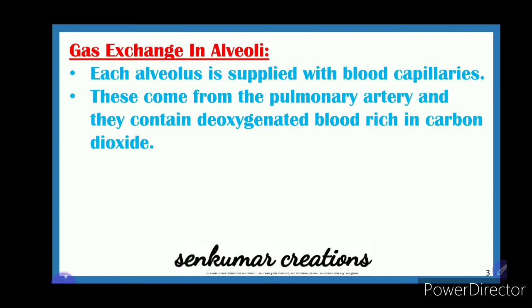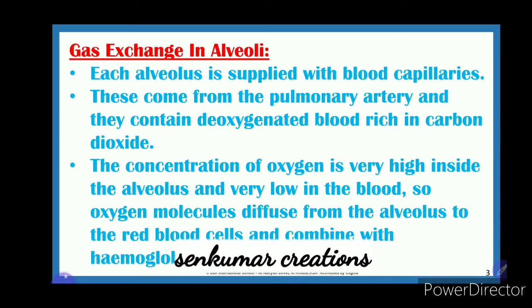The concentration of oxygen is very high inside the alveolus and very low in the blood. When we inhale, the alveolus contains more oxygen while the blood has very low oxygen and high carbon dioxide. Diffusion moves molecules from a region of higher concentration to lower concentration — down the concentration gradient. So oxygen diffuses from the alveolus to the blood capillaries, and carbon dioxide, rich in the blood, diffuses out to the alveolus.